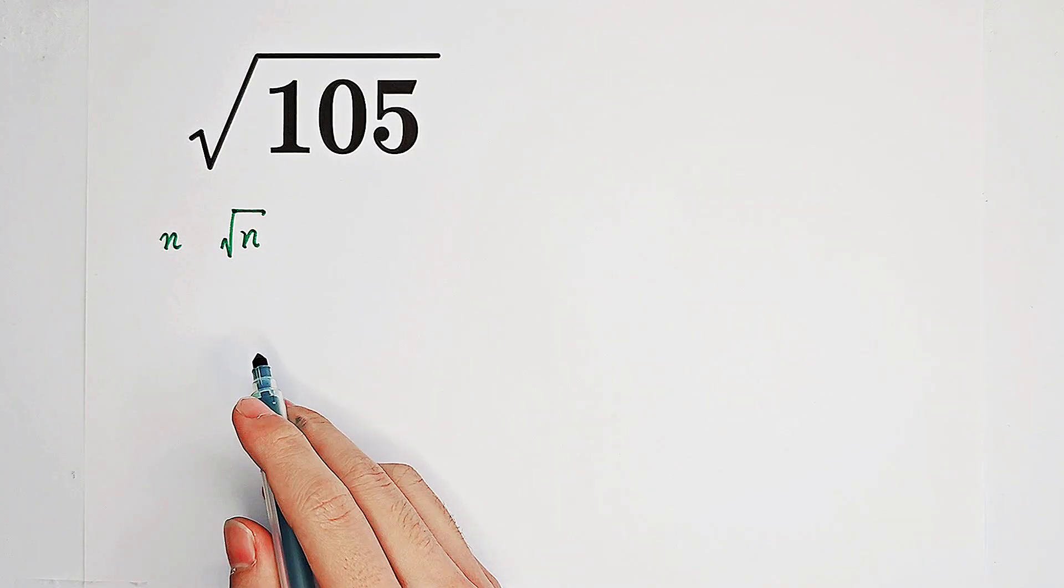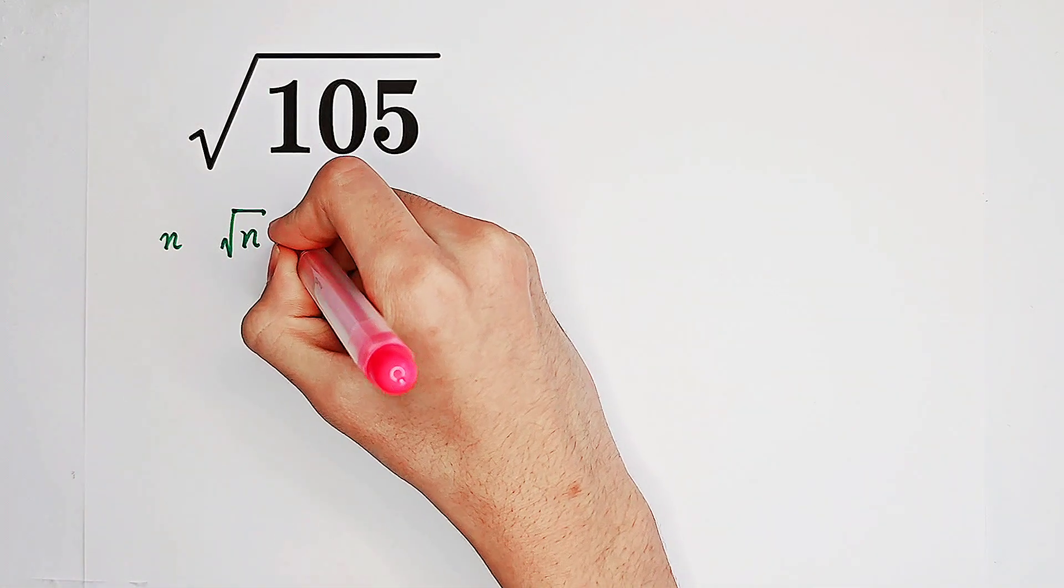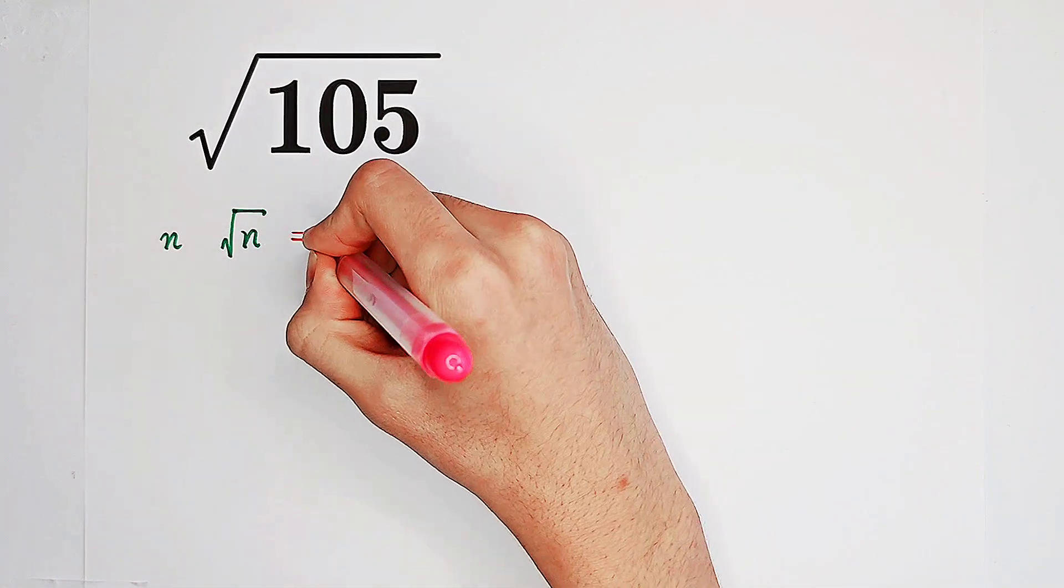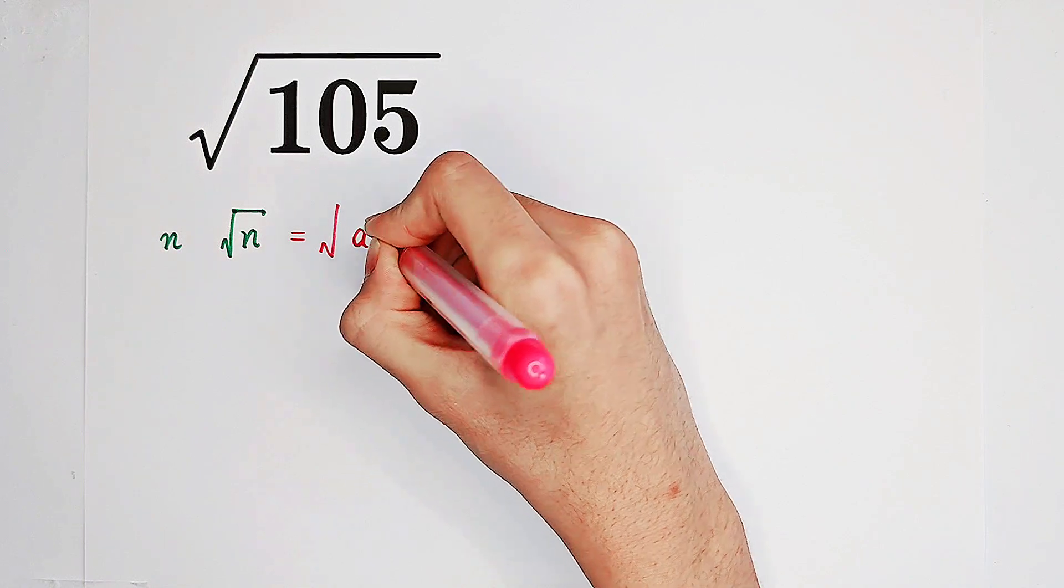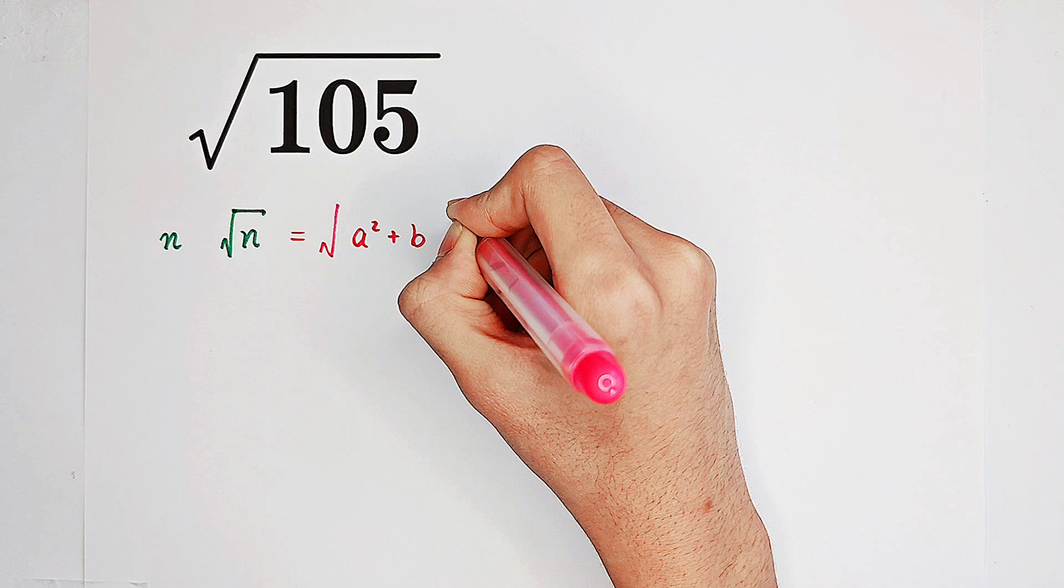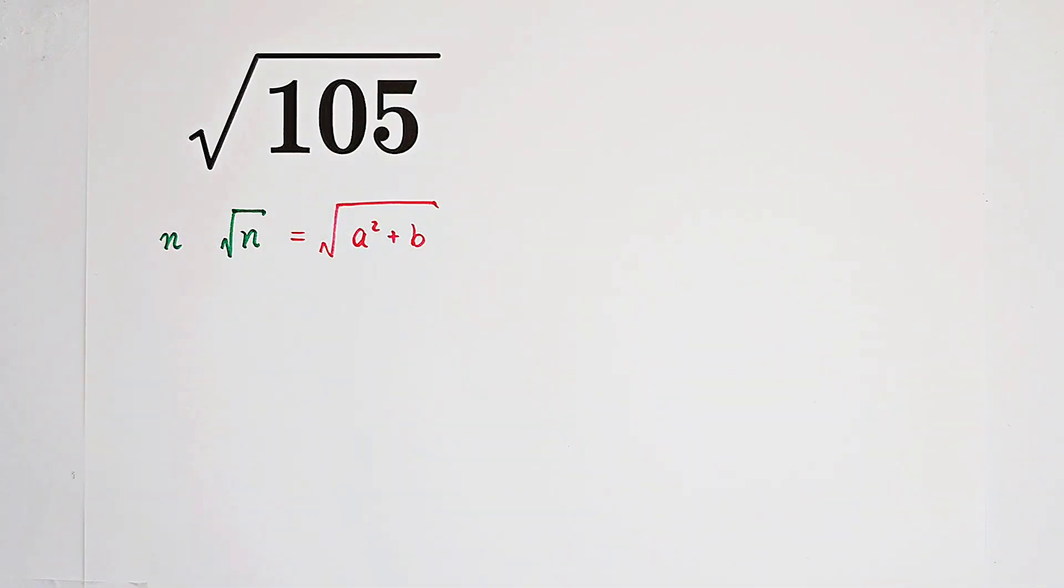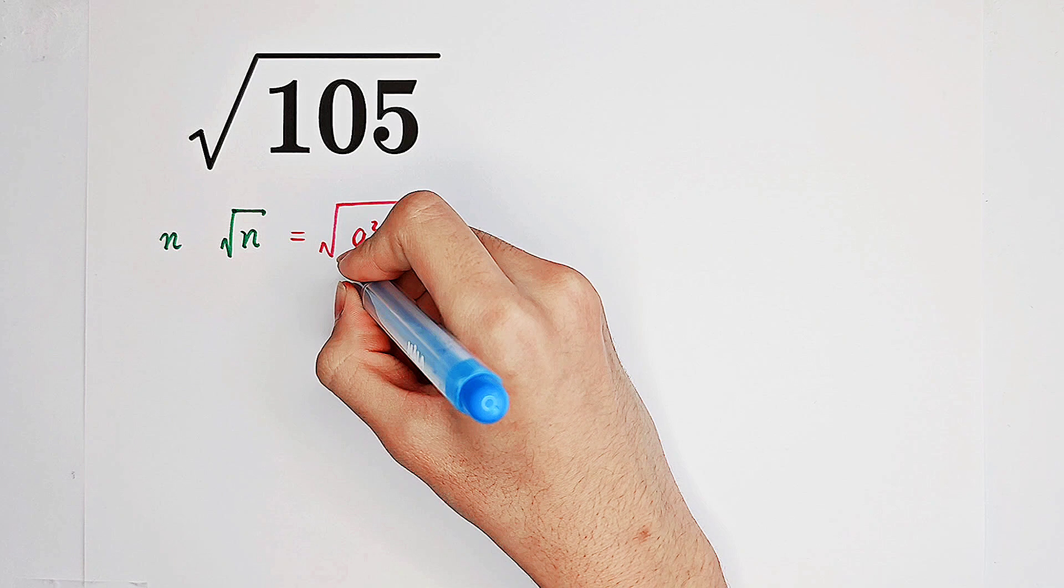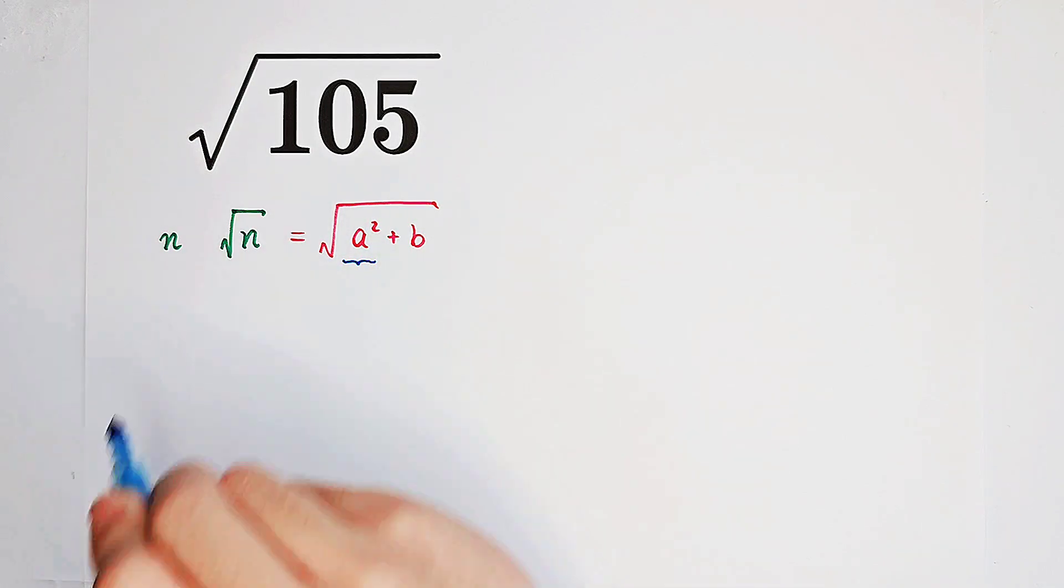And yes, what we do now is every number can be written as the sum of a perfect square, for example a, and another number which is less than a square. So note that a squared is the closest perfect square to n, however less than n.